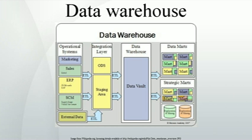Information storage: Facts. A fact is a value or measurement which represents a fact about the managed entity or system. Facts as reported by the reporting entity are said to be at raw level. For example, if a BTS received 1,000 requests for traffic channel allocation, it allocates for 820 and rejects the remaining, then it would report three facts or measurements: TCH REC total equals 1,000; TCH REC success equals 820; TCH REC fail equals 180. Facts at raw level are further aggregated to higher levels in various dimensions to extract more service or business relevant information. These are called aggregates, summaries, or aggregated facts.